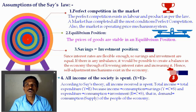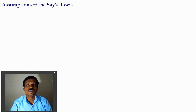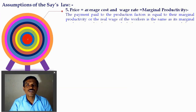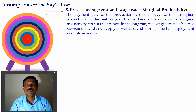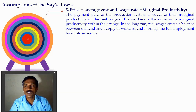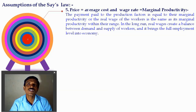All income of society is spent, so income is equal to expenditure — there is no gap between earning and spending. Income is divided into consumption and saving, and expenditure equals consumption plus investment. Therefore, demand equals supply according to J.B. Say's theory. The price, average cost, and wage rate are equal to marginal productivity. Payment to production factors equals their marginal productivity — whatever they add to total productivity, they receive a proportional income. So wage rate equals marginal productivity. In the long run, real wages create a balance between demand and supply of workers, bringing full employment to the economy.